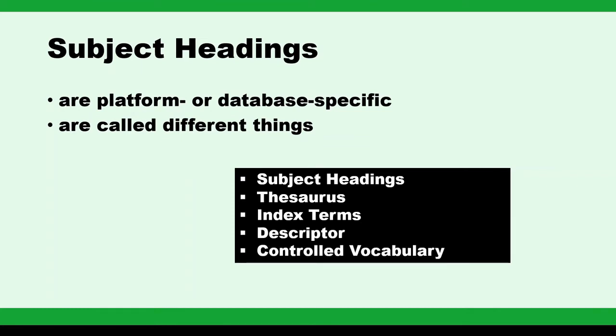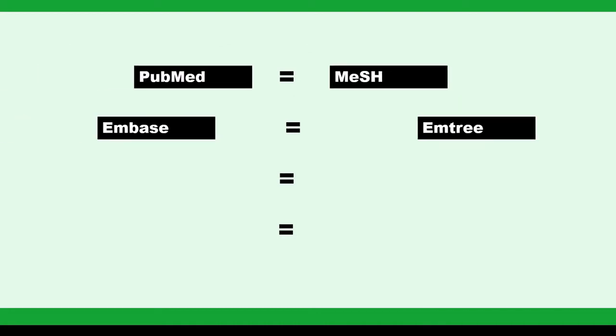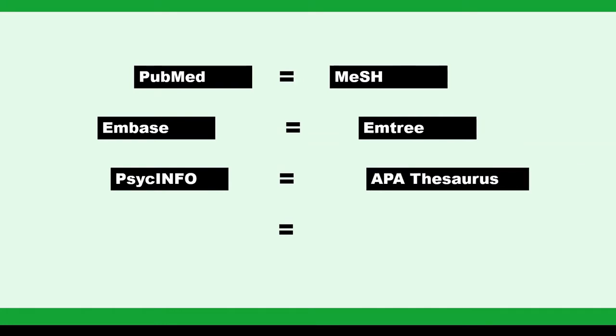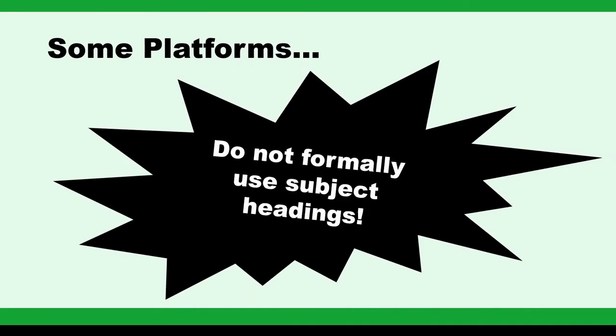PubMed has MeSH, medical subject headings. Embase has Emtree. PsycINFO uses the APA thesaurus. CINAHL, the cumulative index to nursing and allied health literature, uses CINAHL headings. To add to the confusion, some platforms, like Scopus and Web of Science, don't really use subject headings at all.